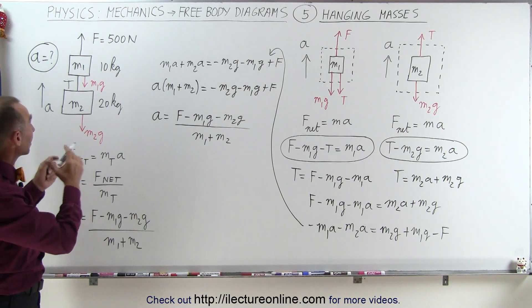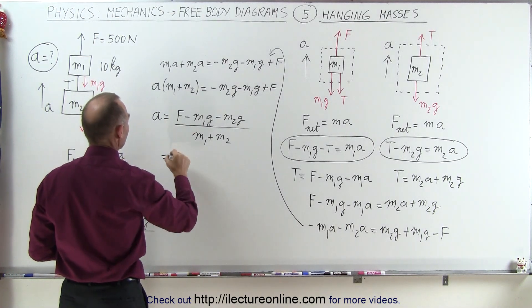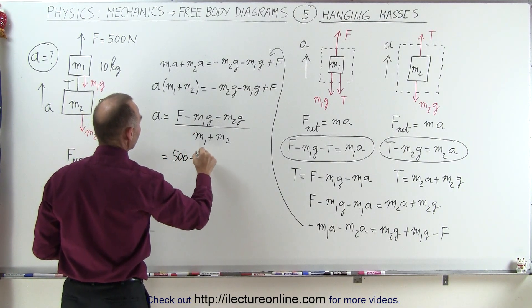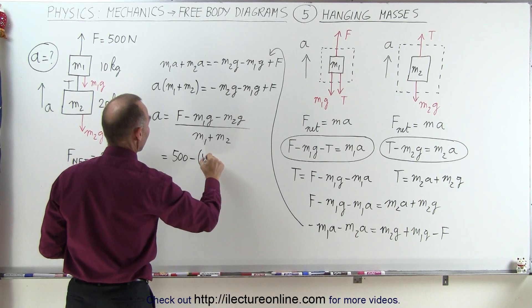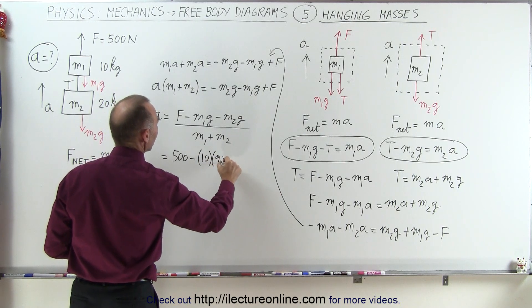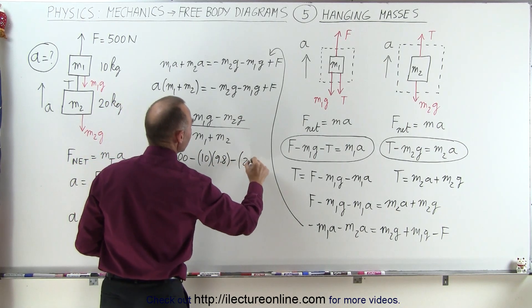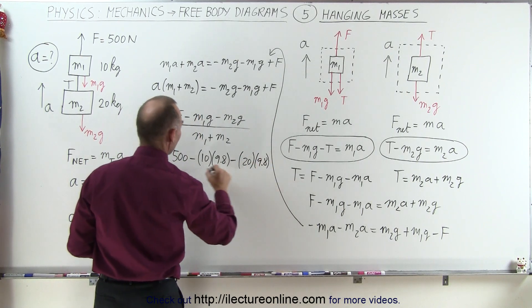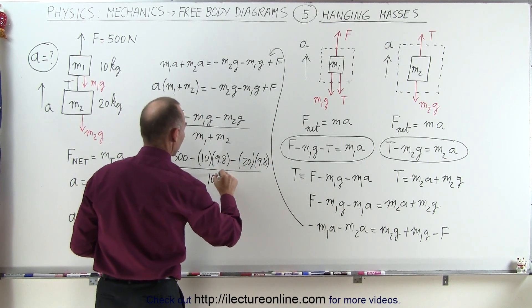Now when we plug in all the numbers that we know, this becomes equal to, that's 500, minus m1 which is 10 times 9.8, minus 20 times 9.8, and divide by the total mass of 10 plus 20.